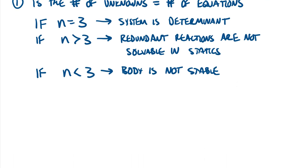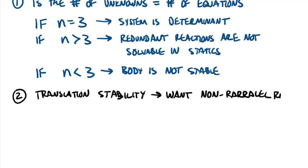So let's look at rule number two, which is related to stability. So for stability, the first one I would look at is translation. So we'll look at translation stability. And really the kind of reactions that prevent our body from translating are non-parallel reactions. So for translation stability, we want non-parallel reactions. Right, remember these are all reaction forces.